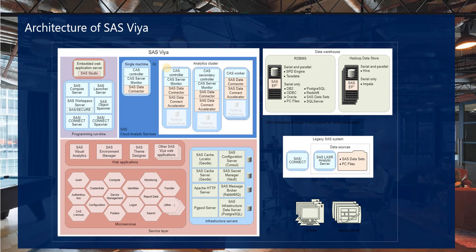In this architecture you can see SAS data connectors, an escalator, and monitor servers. In the data warehouse we have RDBMS including DB2, Oracle, ODBC, PC files, PostgreSQL, SAS datasets, SAS 7 BDAT files, SAS base files, SQL Server, and also Hadoop, because SAS Viya has the capability to handle large datasets.